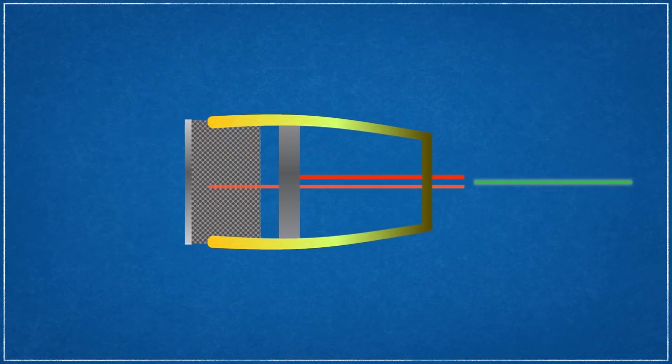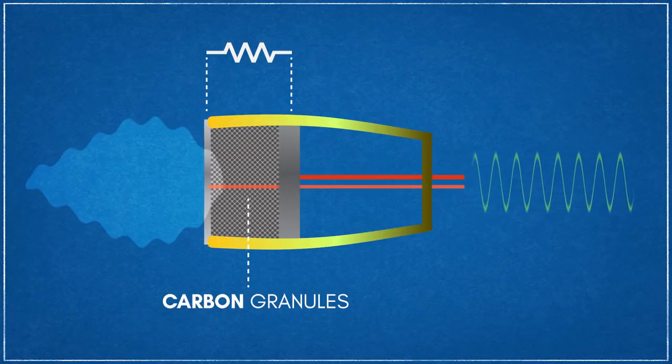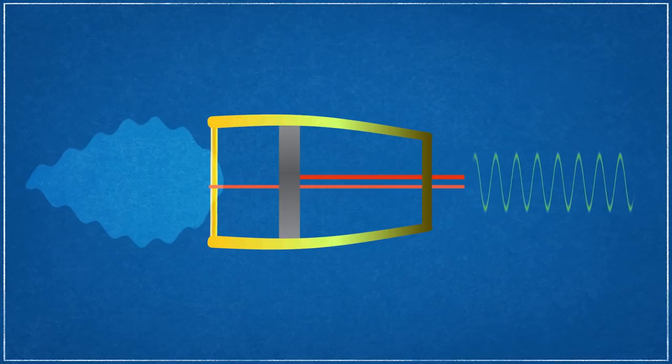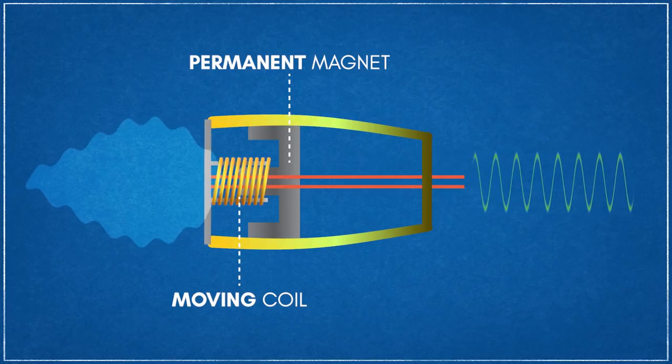Microphones can operate on one of several principles to convert sound energy to an electrical signal. Early carbon microphones use sound waves to modulate the electrical resistance of the microphone. Its more common successor, the condenser microphone, uses the same principle but modulates the capacitance of the device instead. Other configurations, such as dynamic and ribbon microphones, rely on magnetic induction created by a moving, sound-sensitive diaphragm.